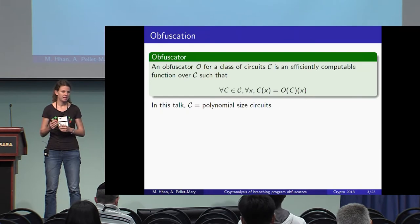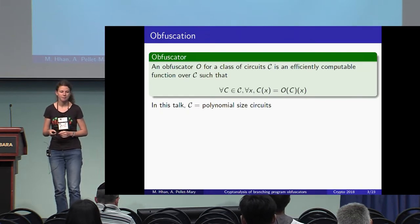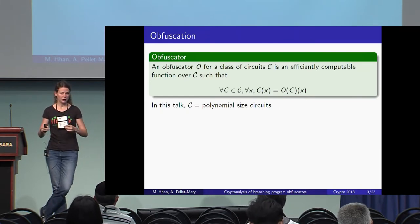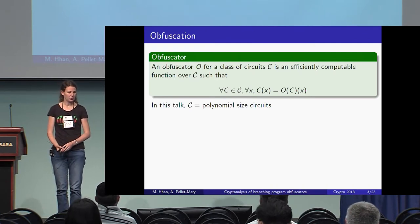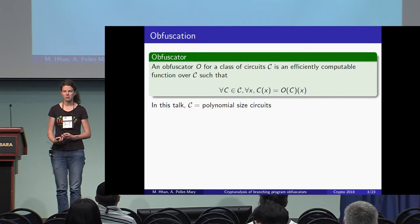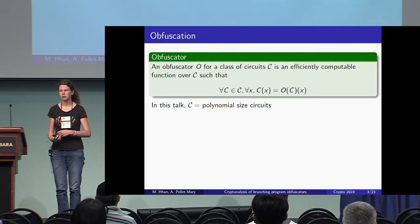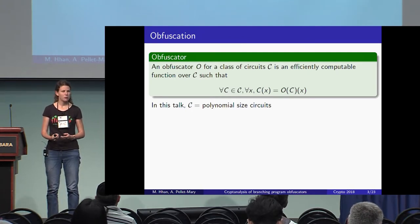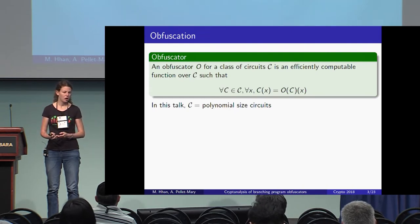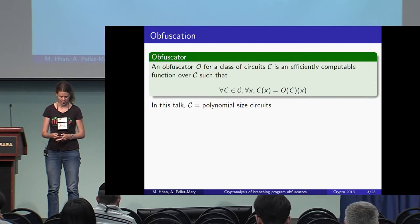Let me start by defining what an obfuscation scheme is. From a functionality point of view, an obfuscator is simply an efficiently computable function transforming a circuit into an equivalent circuit — one that computes the same function. In this talk, we will be interested in obfuscators for the class of all polynomial-size circuits or all polynomial-size branching programs.